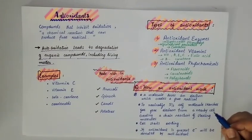Now what can this oxidation do? Auto-oxidation leads to degradation of organic compounds, including living matter. It can degenerate organic compounds, including our living matter. What are some examples? Vitamin C is a very good antioxidant. Vitamin E, beta-carotene, and carotenoids are all very good antioxidants.